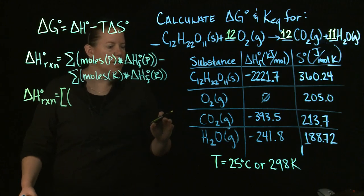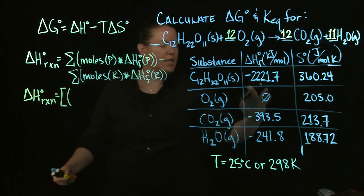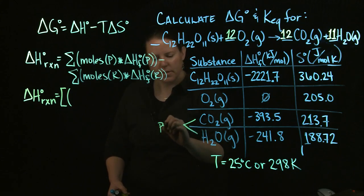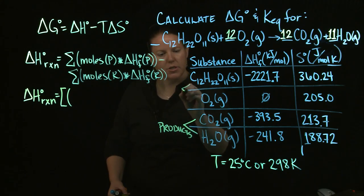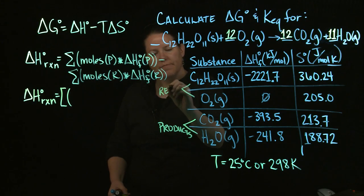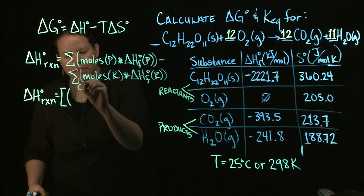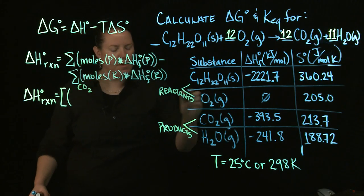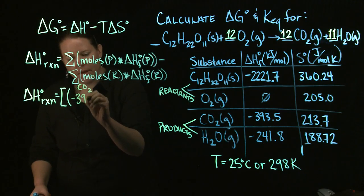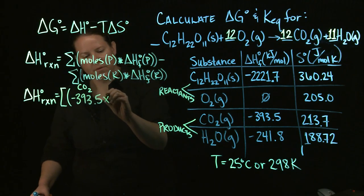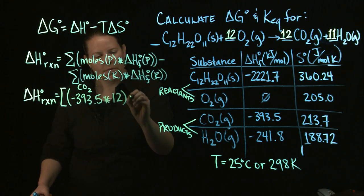Let's do delta H of reaction first and then we'll do the S of the reaction the exact same way. So this is keeping a lot in mind. You have to figure out what the delta H is for the products first. So you got to figure out that these are products and maybe label this as such. These are reactants. I'm going to start because the products come first with CO2.